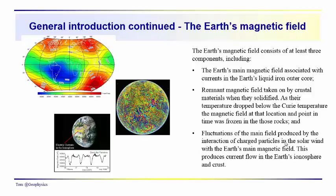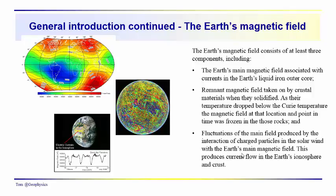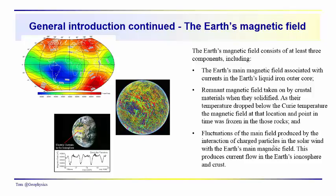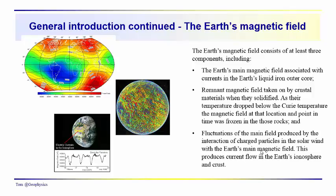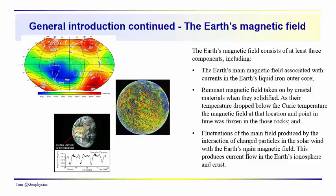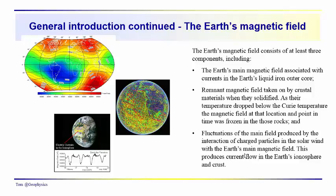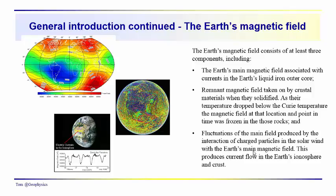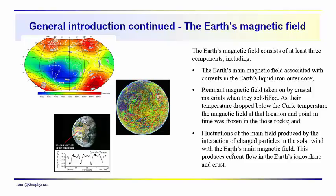And then there are also the fluctuations which are shorter term in nature, associated with charged particles from the solar wind slamming against the Earth's main magnetic field, stirring things up, creating secondary electromagnetic fields, currents, and so on, that we see when we're out collecting data. Those magnetic fields can be quite large and make it nearly impossible to collect good data.